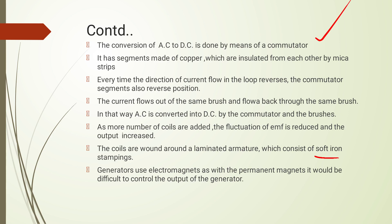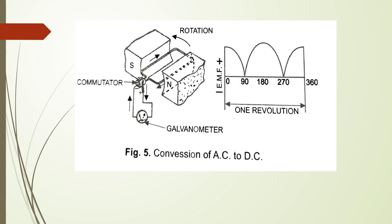Generators use an electromagnet rather than a permanent magnet, because with a permanent magnet it would be difficult to control the output of the generator. For the conversion of AC to DC, we make more coils and control the rotation.